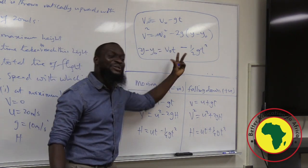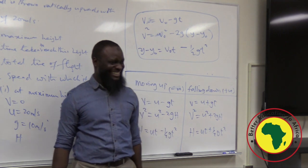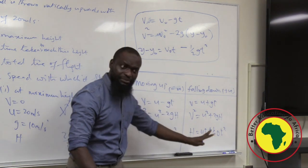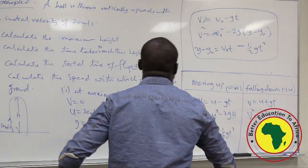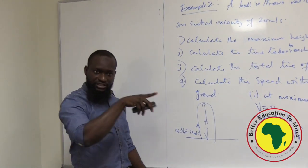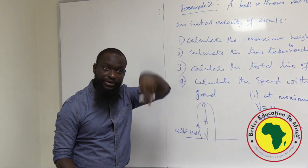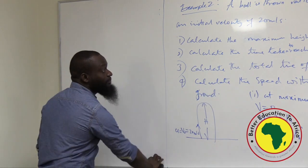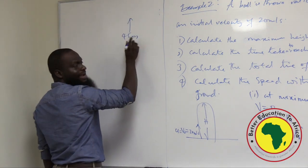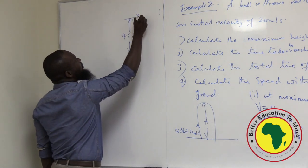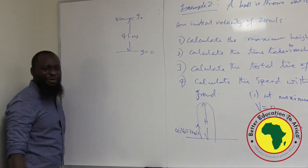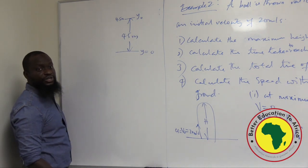These are all you need to solve projectile motion. Now let's use them to solve the coconut problem. For the coconut falling from 45 meters: Y-naught equals 45 m, Y equals 0 (ground). Using Y minus Y-naught equals V-naught·T minus half·g·T squared: 0 minus 45 equals 0 minus half times 10 times T squared. The minuses cancel, giving 45 equals 5T squared, so T squared equals 9, and we get the same 3 seconds — but now using the correct assumption.